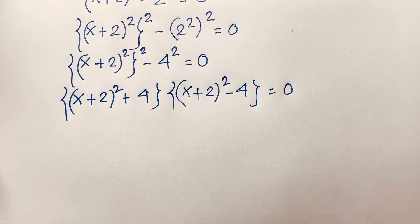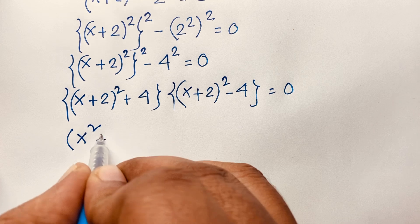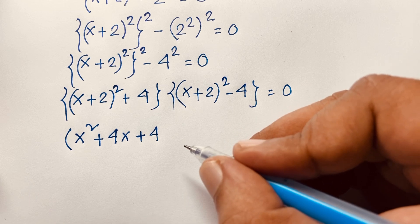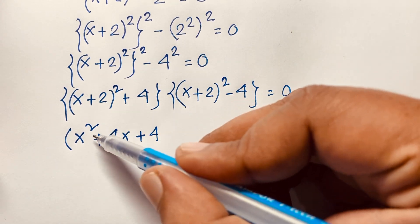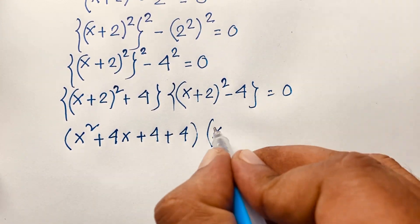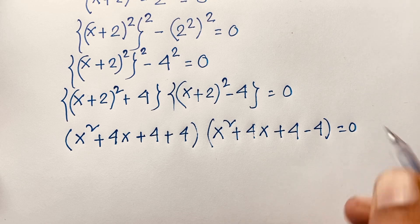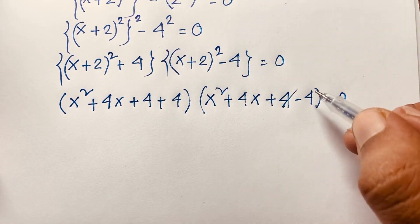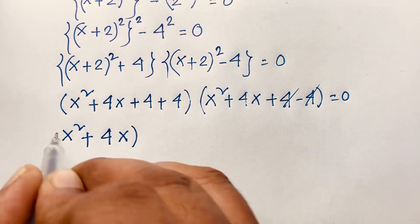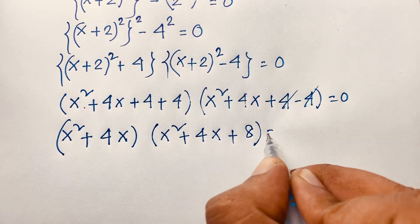Now we have two cases. Expanding using (a plus b) whole squared equals a squared plus 2ab plus b squared, the first factor gives x squared plus 4x plus 4, and added to positive 4 gives x squared plus 4x plus 8. The second factor gives x squared plus 4x plus 4, minus 4, which equals x squared plus 4x. So we have: (x squared plus 4x)(x squared plus 4x plus 8) equals 0.